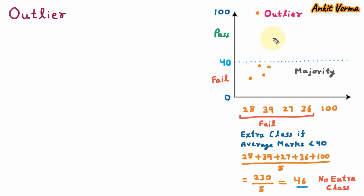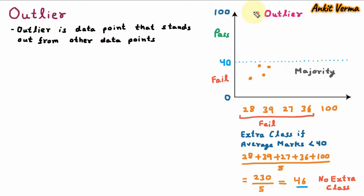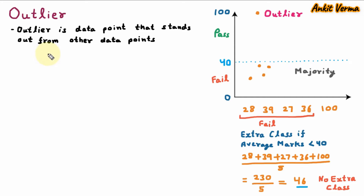Outlier is a data point that stands out from other data points. Outlier is a data point which is very far from the other data points that are in majority. Outlier has much higher or much lower value than others. Here we have the outlier value which is 100, which is very high from the remaining values.